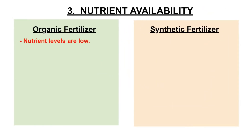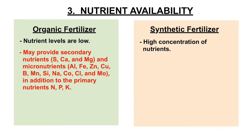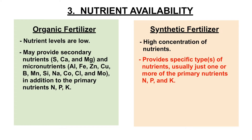3. Nutrient Availability. Nutrient levels in organic fertilizers are low compared to synthetic fertilizers. Synthetic fertilizers contain highly concentrated nutrients. However, organic fertilizer may provide other macronutrients and micronutrients not found in synthetic fertilizers, such as sulfur, calcium, magnesium, aluminum, iron, zinc, copper, boron, manganese, silicon, sodium, cobalt, chlorine, and molybdenum. Synthetic fertilizers provide specific types of nutrients which are usually limited to one or more of the three primary nutrients: nitrogen, phosphorus, and potassium.